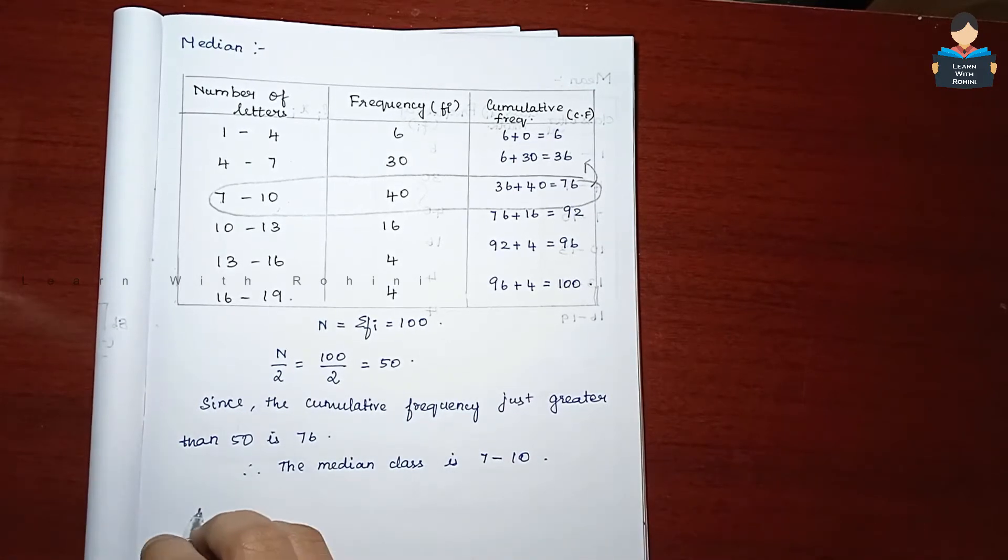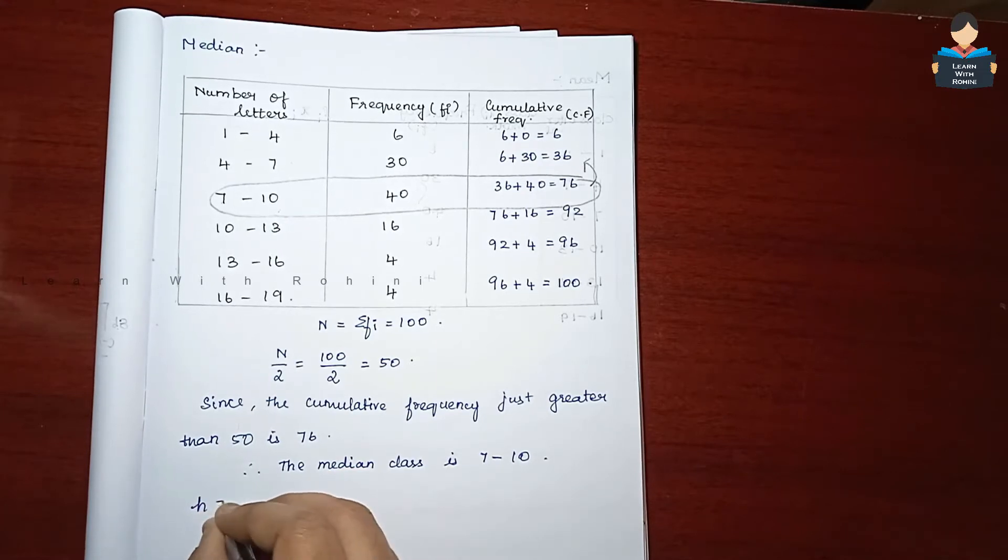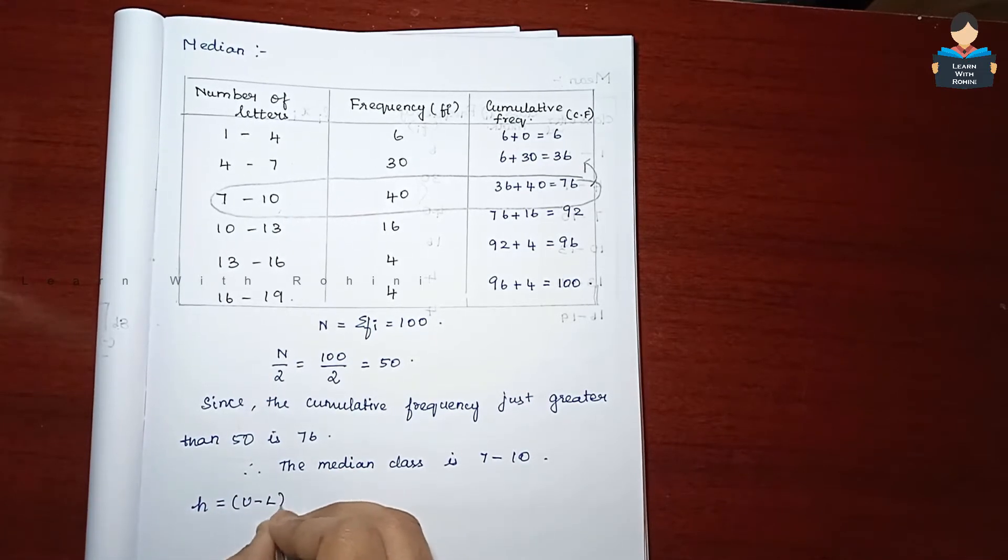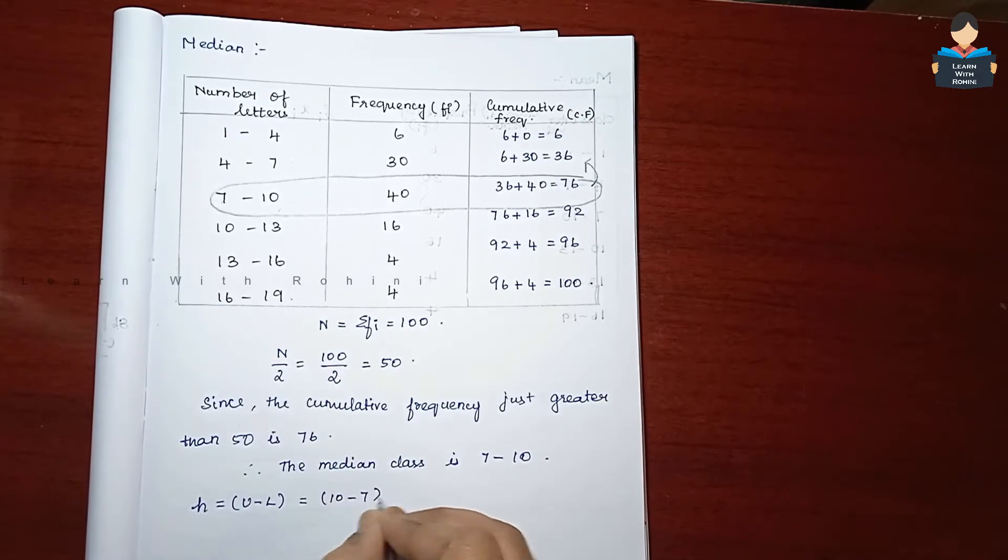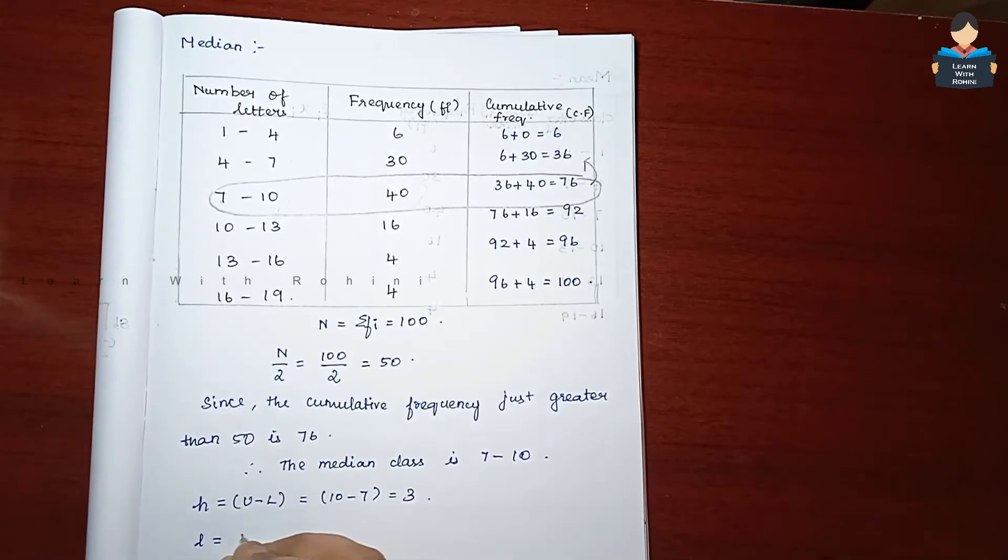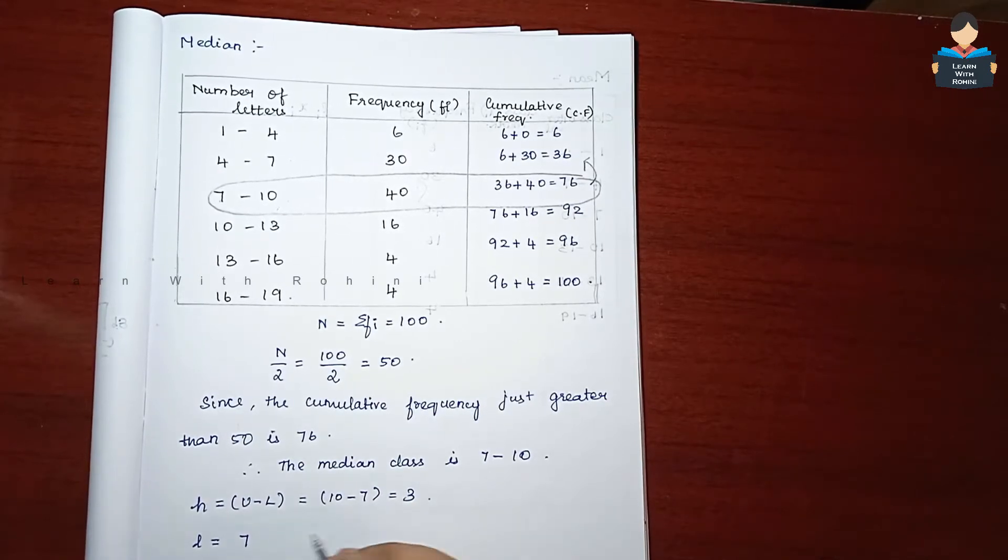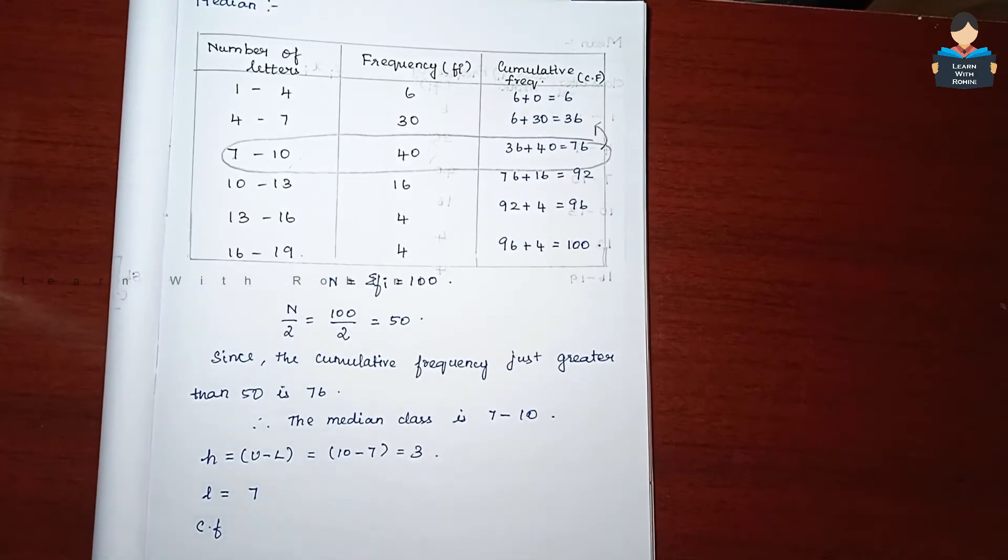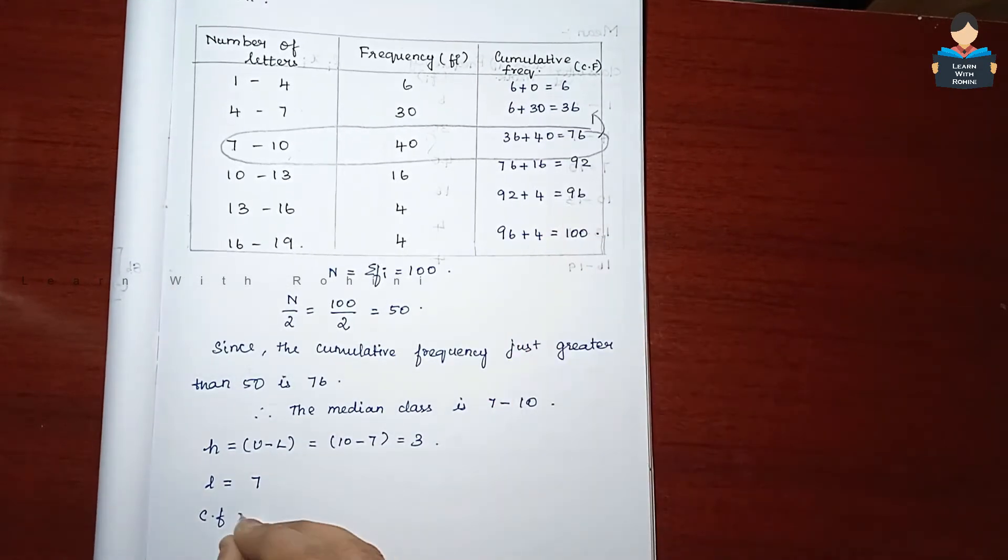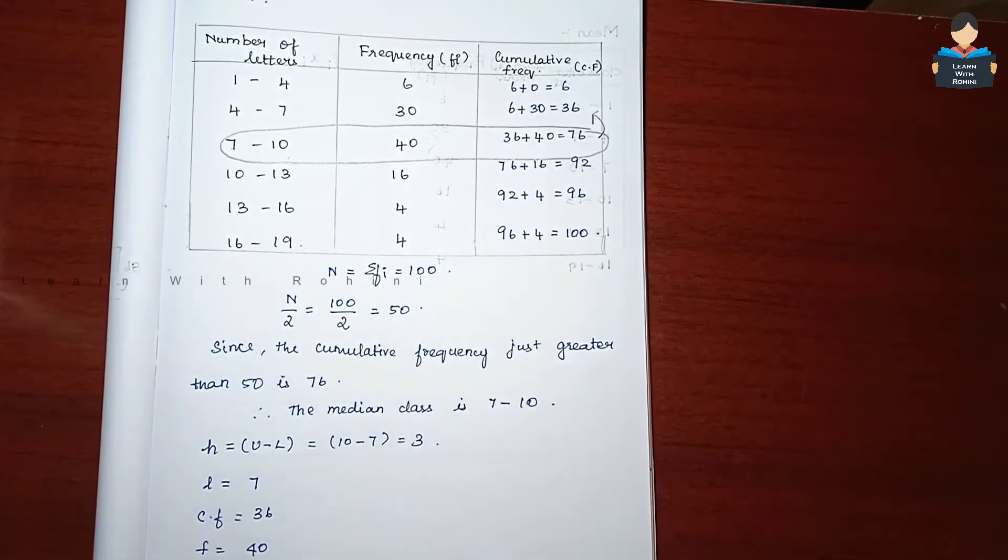Now class size, lower limit, this is CFF. Class size H equals upper limit minus lower limit, which is 10 minus 7 equals 3. The L value, lower limit is 7. The CF, cumulative frequency before the median class is 36. So F is 40.